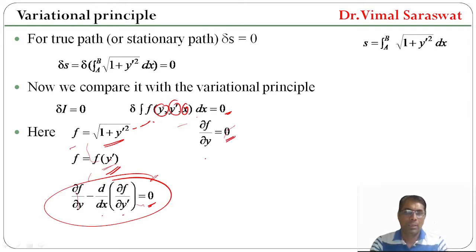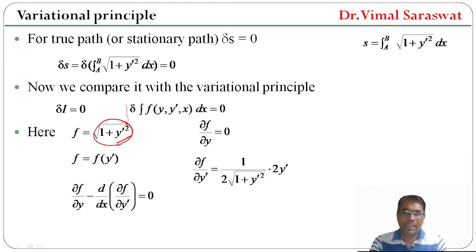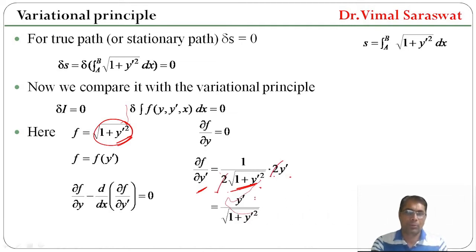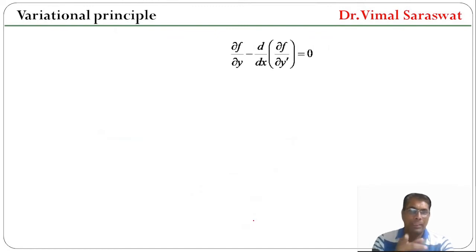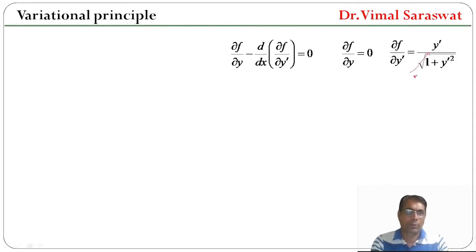From the variational principle, the Euler-Lagrange equation gives ∂F/∂y − d/dx(∂F/∂y') = 0. Since F does not depend on y, ∂F/∂y = 0. Differentiating F = √(1 + y'²) with respect to y' gives ∂F/∂y' = y' / √(1 + y'²). Since ∂F/∂y' does not depend explicitly on x, d/dx(∂F/∂y') evaluates as follows.